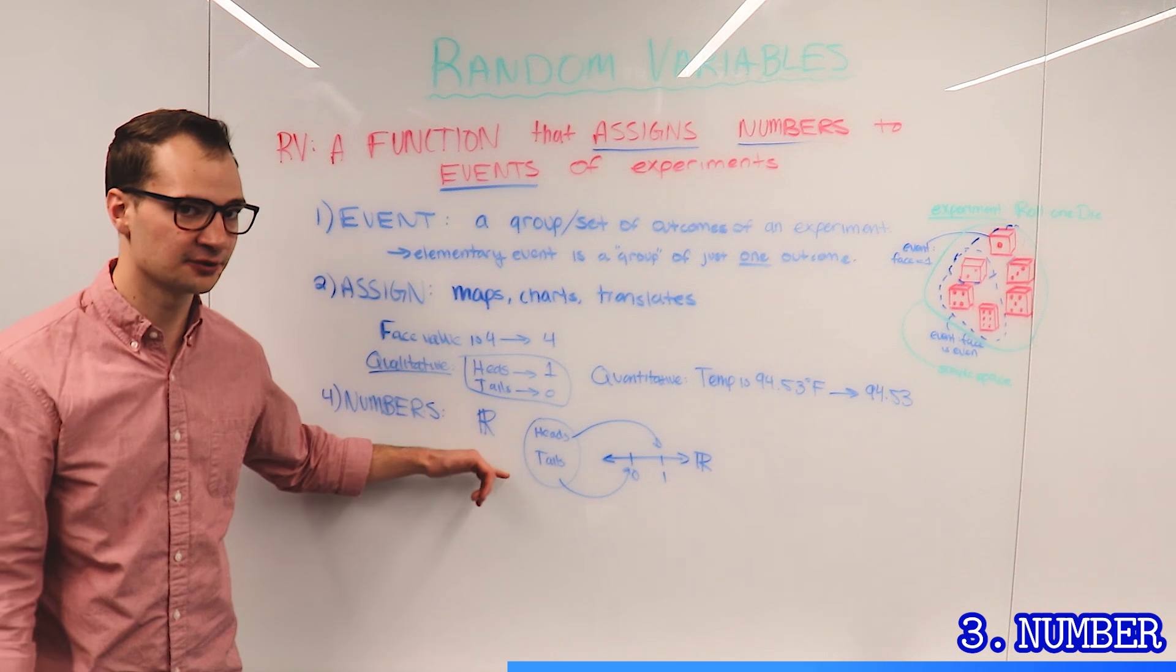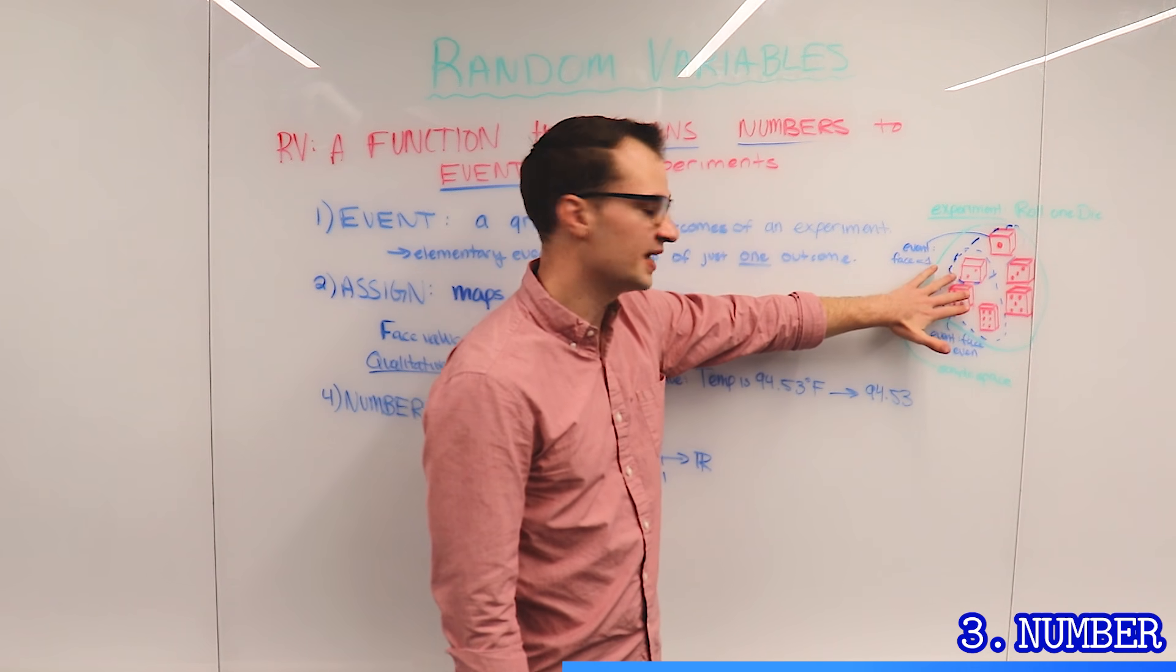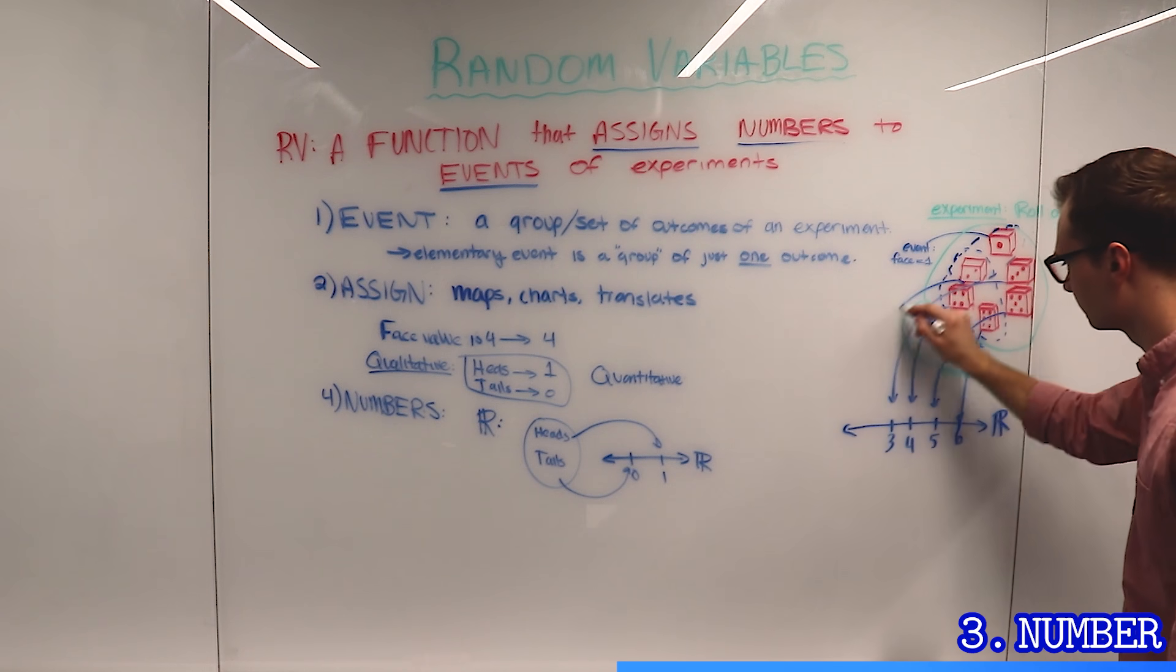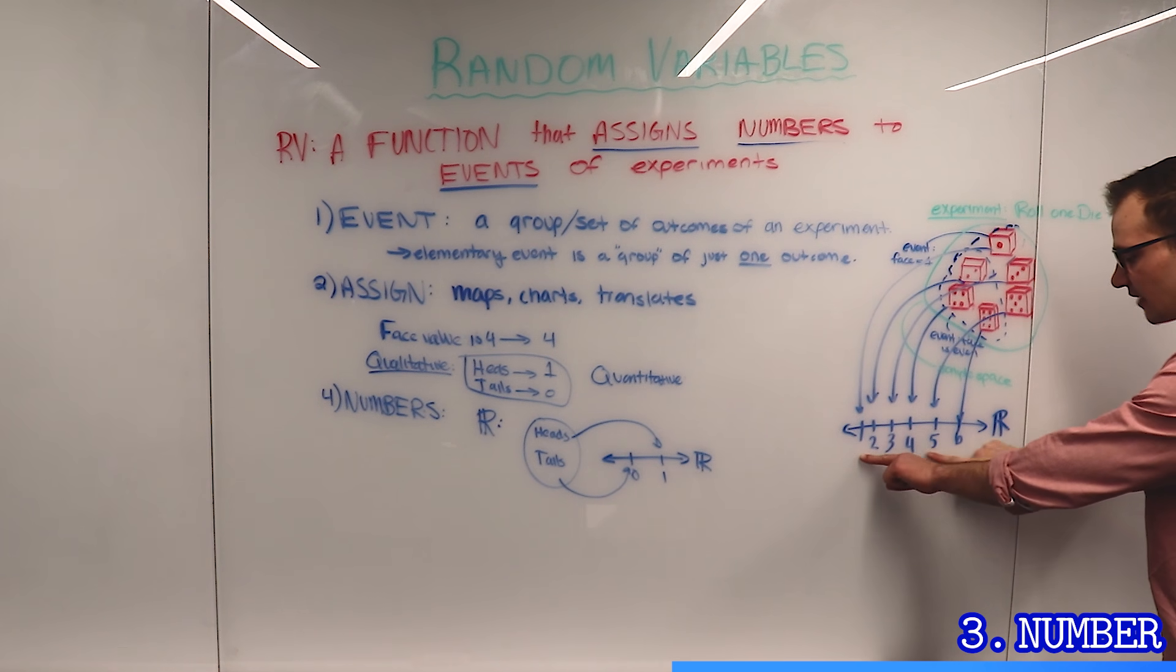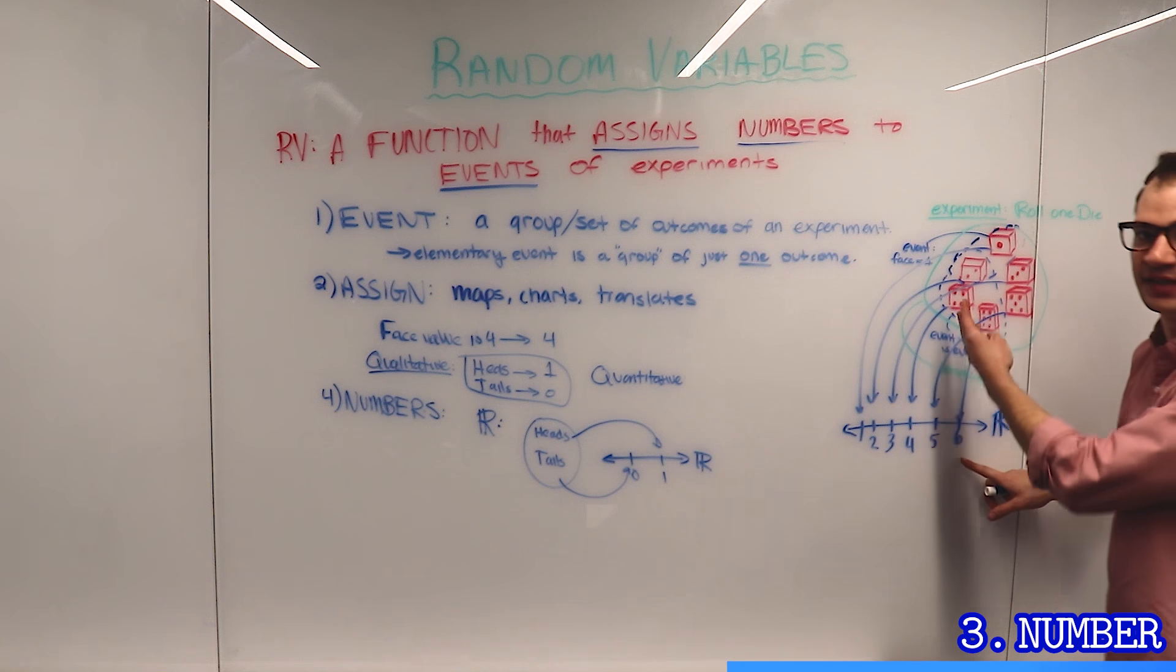In our dice example, we're going to take each face that comes up and map it onto the real number line. These arrows are the assignment operator, and these values are the numbers that we've assigned to each outcome.